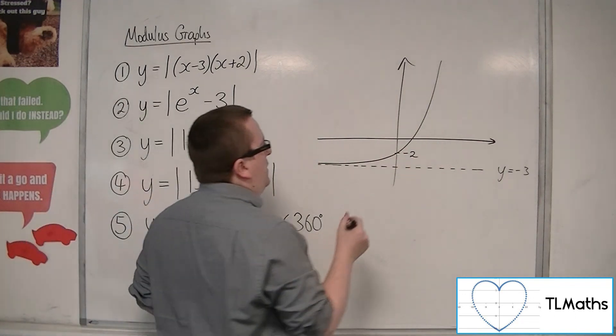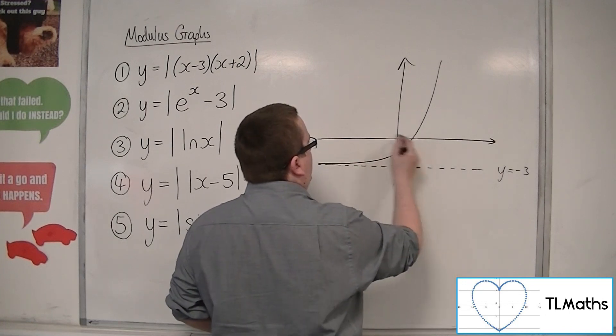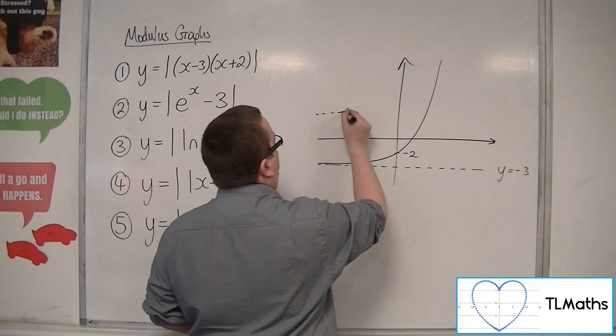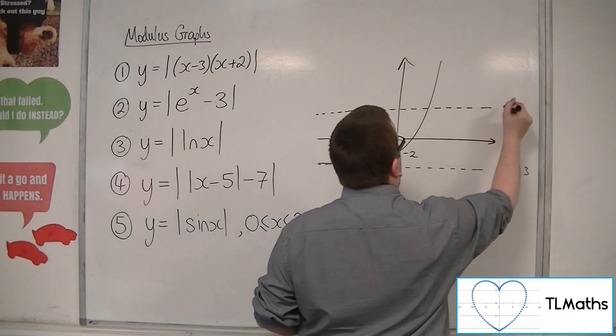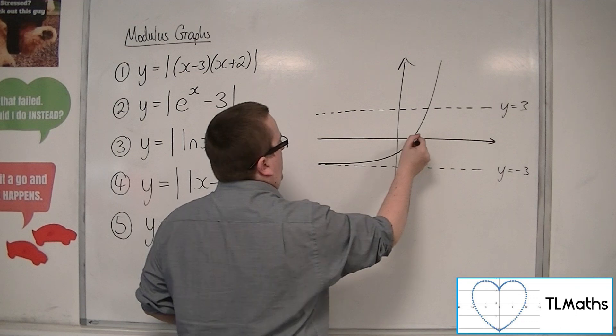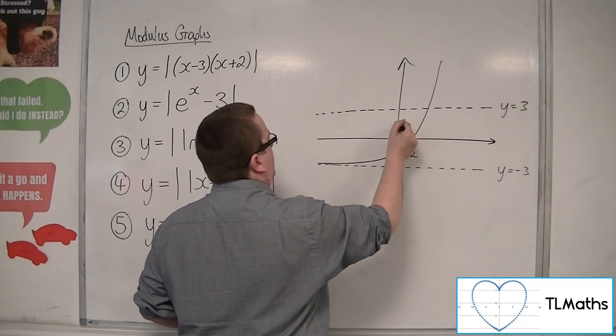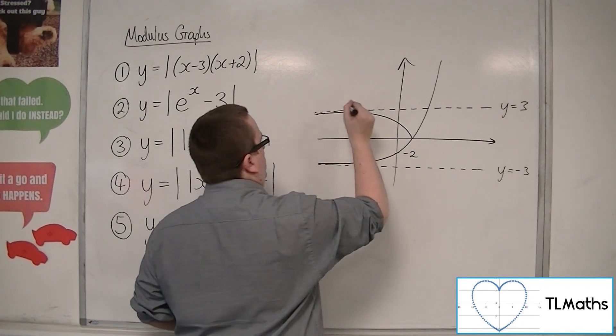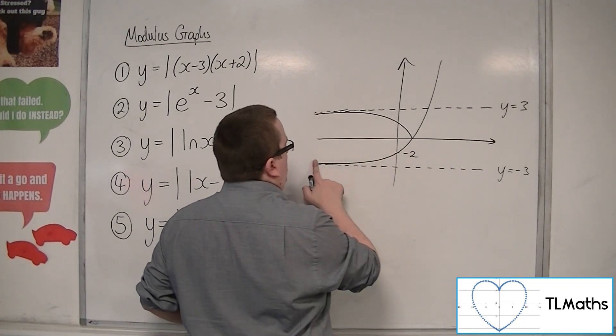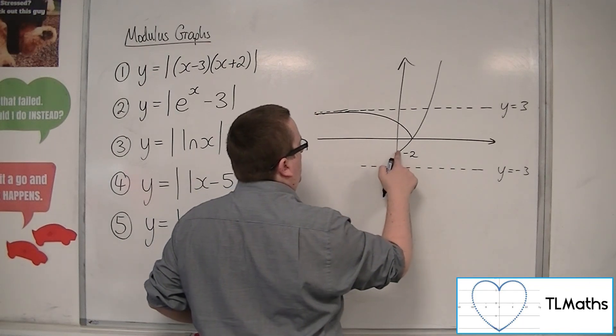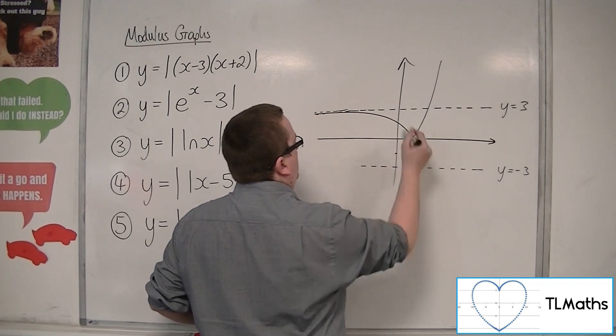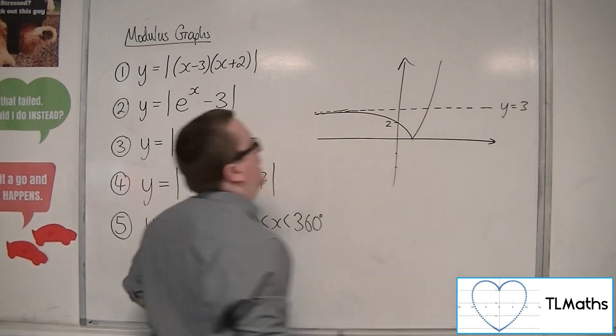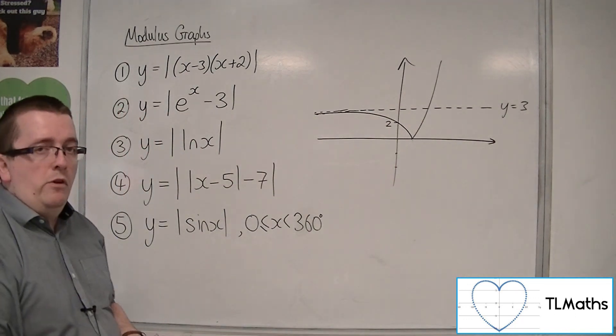So this part of the graph gets reflected in the x-axis. So we would have horizontal asymptote, y equals 3, and this part of the graph would reflect up and would just approach it. I kind of went over my line there. So that part can go. So that would be at 2, and that would be the shape of my graph.